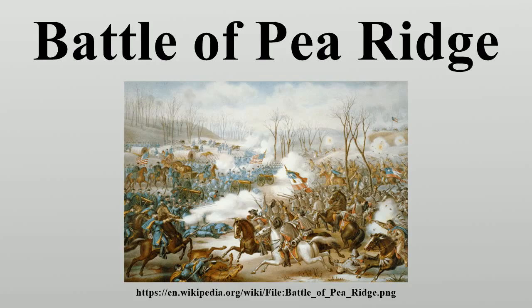On March 4, 1862, instead of attacking Curtis' position head-on, Van Dorn split his army into two divisions under Price and McCulloch, ordering a march north along the Bentonville detour to get behind Curtis and cut his lines of communication. For speed, Van Dorn left his supply trains behind, which proved a crucial decision. Amid a freezing storm, the Confederates made a three-day forced march from Fayetteville through Elm Springs and a sage spring to Bentonville, arriving stretched along the road, hungry and tired.